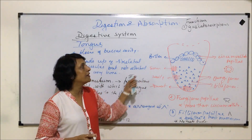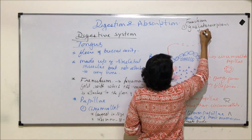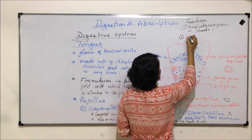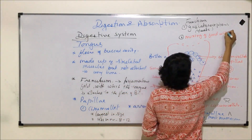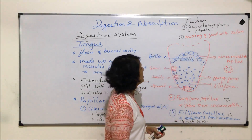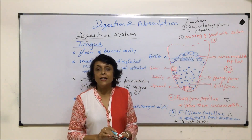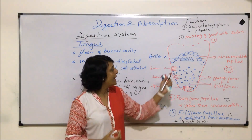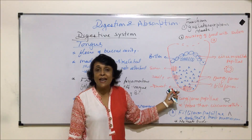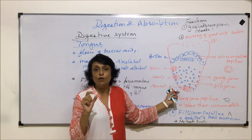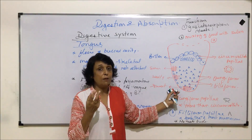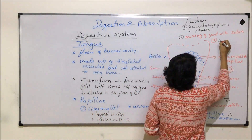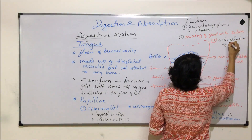So now we know the three types of papillae and the tastes we detect. The first function we have written is gustatoreceptors — they detect the taste. The second function is that our tongue helps in mixing of food with saliva. The third important function is that it helps in articulation of speech. When the tongue touches various parts of the buccal cavity, we are able to form words properly.